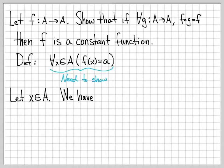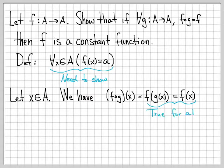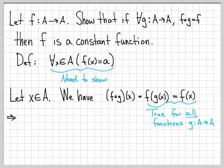So let x be in A. We have an assumption: f composed of g of x, which by definition is f of g of x, is equal to f of x. That's our assumption — something we know. And this is true for all functions g, so no matter what function g we choose, this is always true.